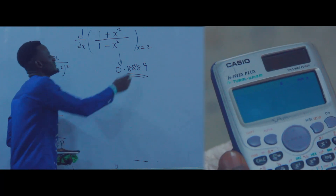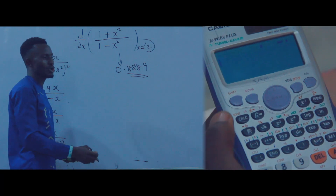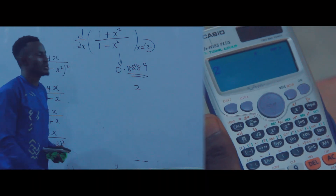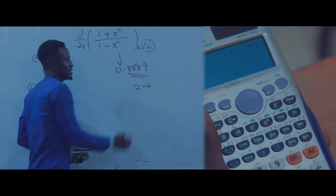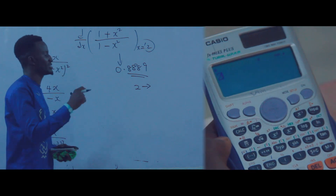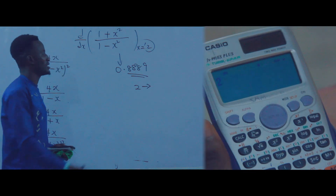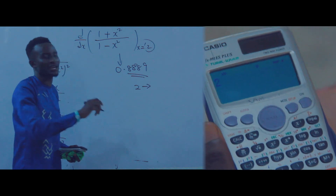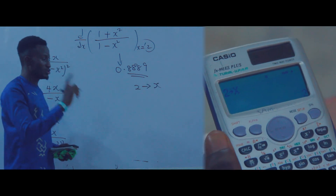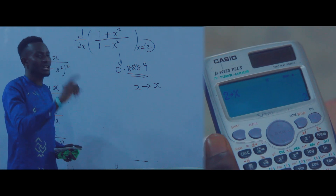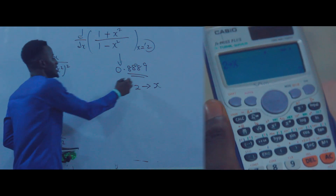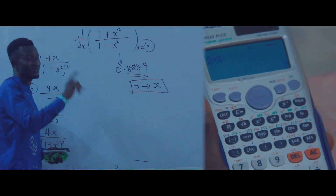Now press AC, then save the x value we used. Press 2, then press SHIFT, then press RCL, then press the button for x (closed bracket). That's how to save — you have now saved x as 2.